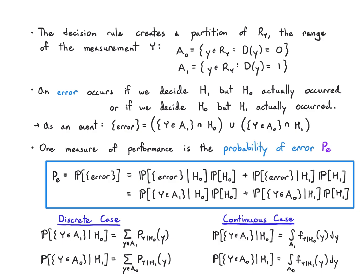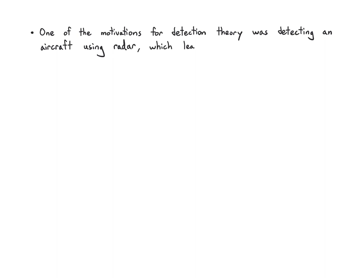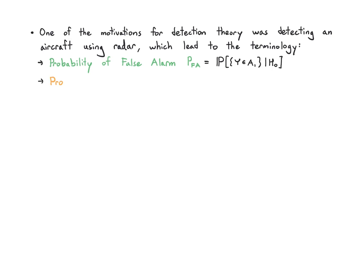It's easier to understand this with some visualizations. One of the motivations for detection theory was originally detecting an aircraft using a radar signal, and this motivated the following terminology. There's the probability of a false alarm, PFA — the probability that you fall into a1 given h0. That's a false alarm because there's no aircraft but you're declaring that there is one. On the other side is missed detection, PMD — the probability that you say there's nothing there but in fact there is an aircraft.